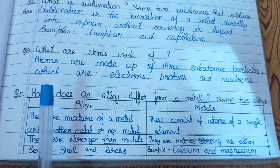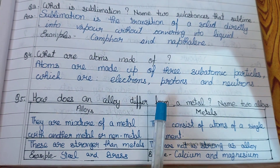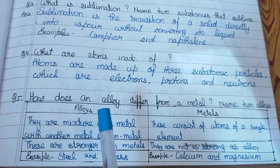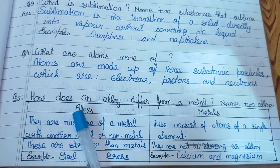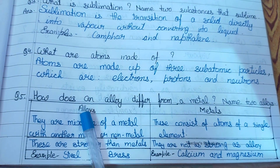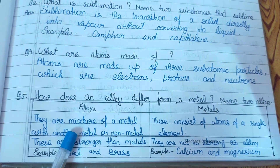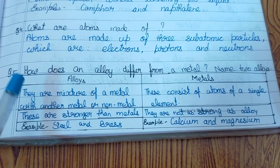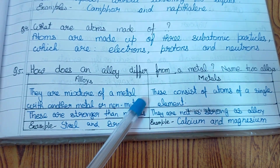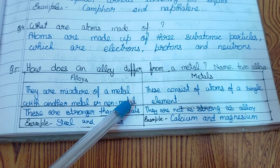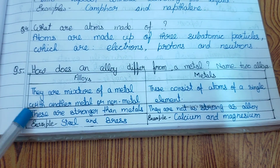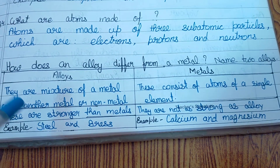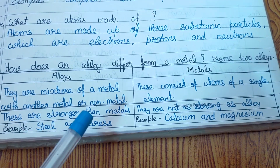Question number 5: How does an alloy differ from a metal? Name two alloys. You will divide the answer into two parts. First part — alloy: they are a mixture of a metal with another metal or non-metal; they are stronger than metals. Example: steel and brass.